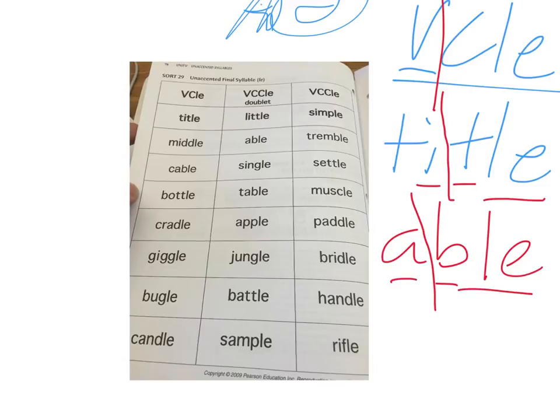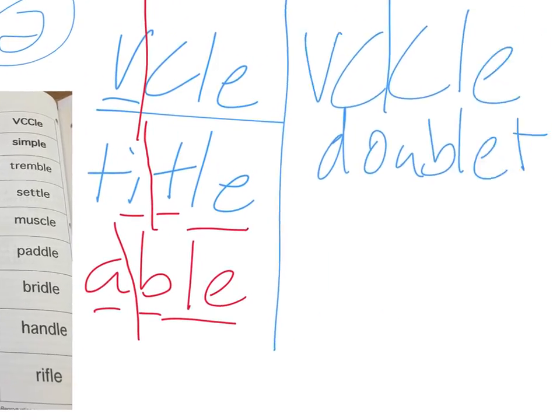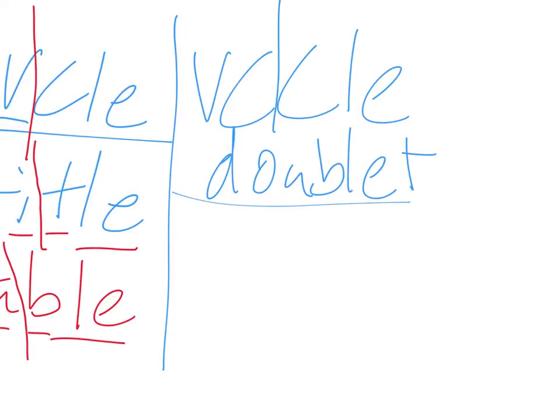For example, the word little. Little, L-I-T-T-L-E. And you notice this one, your juncture is right here. You have your vowel, consonant, consonant. It's a doublet. It's the same consonant. And then your L-E. And in this one, you have little, you have a short vowel sound. In all these V-C-C-L-E words, you're going to have short vowels.